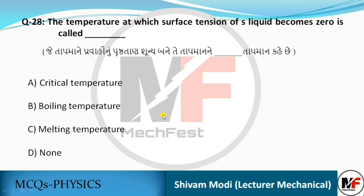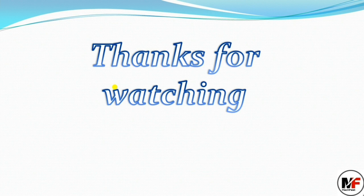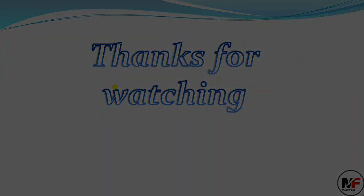The temperature at which the surface tension of a liquid becomes zero is called critical temperature. Thanks for watching this video. If you like my video, please share and subscribe. Thanks again.